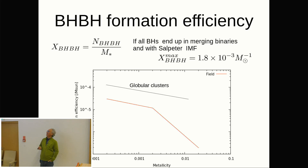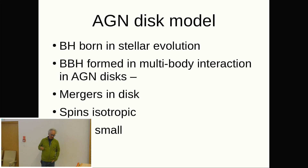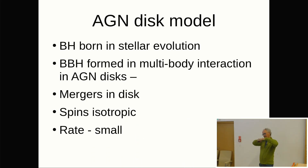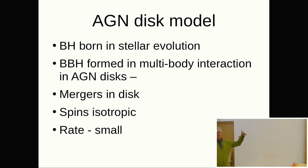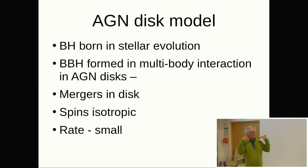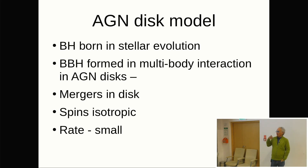The AGN disk model: black holes born in stellar evolution are captured in accretion disks around massive black holes, and binary black holes are formed in multi-body interactions in AGN disks. Spins would be isotropic. However, the rate would be very small because the fraction of all stellar mass in AGN disks is only about 10^-5 to 10^-6 of available stellar mass. Even with 100% efficiency, there is not enough of this environment to account for the observed rate. I am very skeptical about this model.